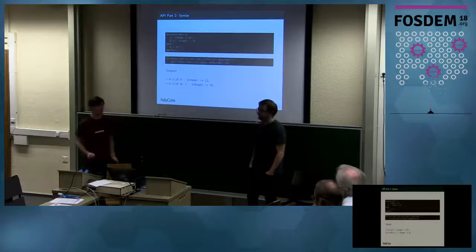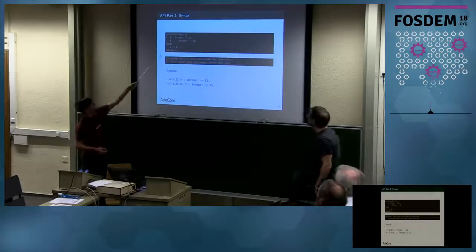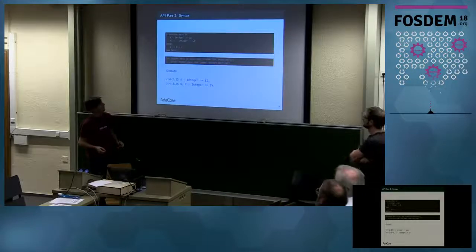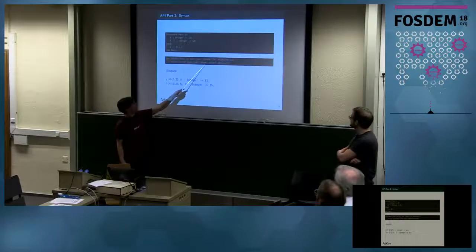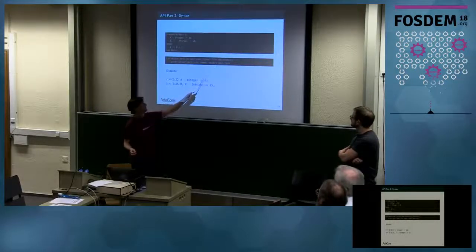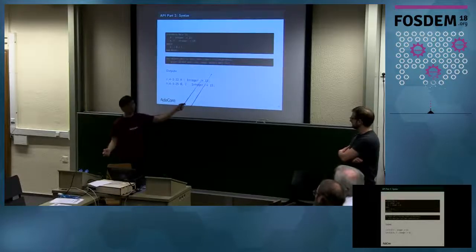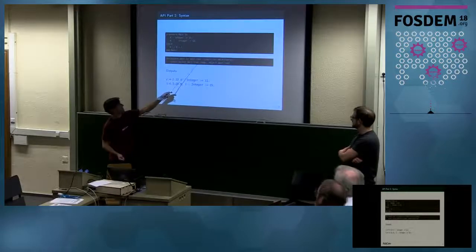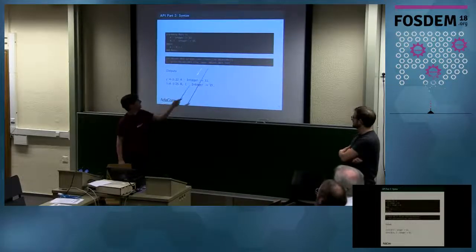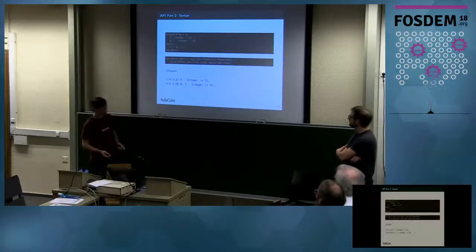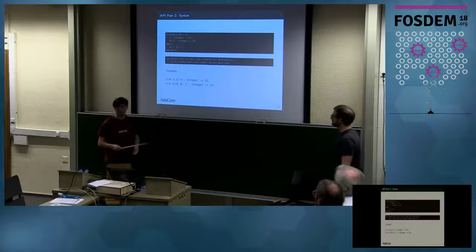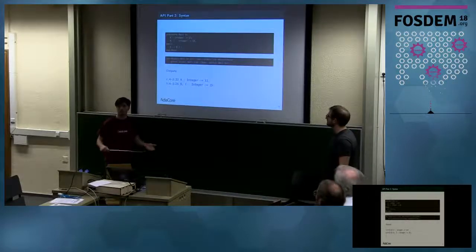Next level — the syntactic level. This is a more complex Ada program. You take the root node of your analysis unit and ask it to find all nodes that comply to a predicate. This is a type query: find all nodes that are object declarations, print their source location ranges and their text. This is the result. Performing this kind of query is useful, for instance, for linters.